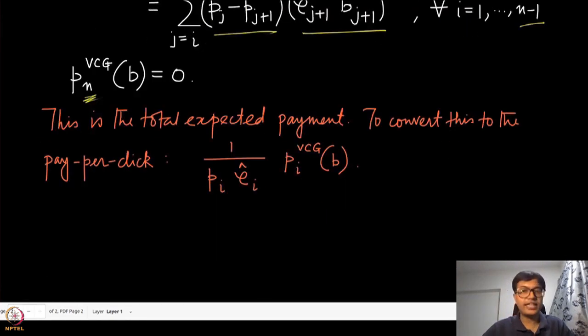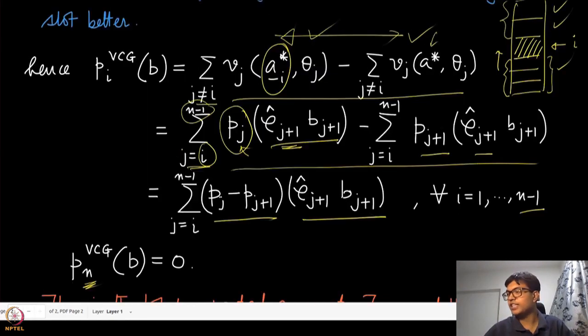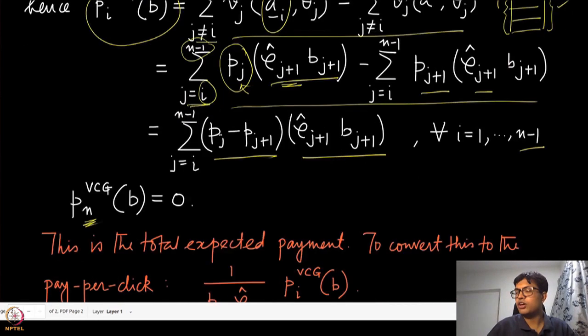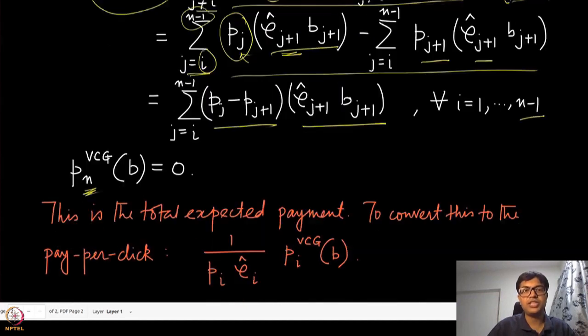Now, this is the total expected payment. You can think of this as after observing that they have been clicked or not. Now this click is essentially a probabilistic event. Therefore, what the search engine or the publisher can charge is for a specific click; it can charge just by dividing with the probability of that click.